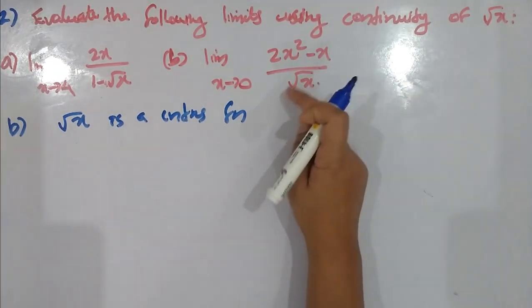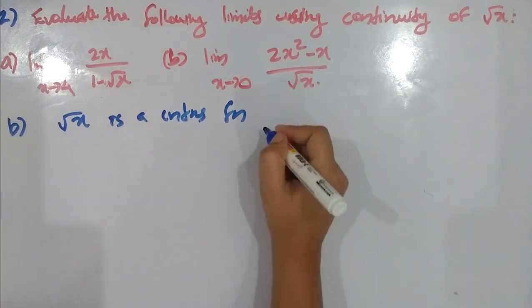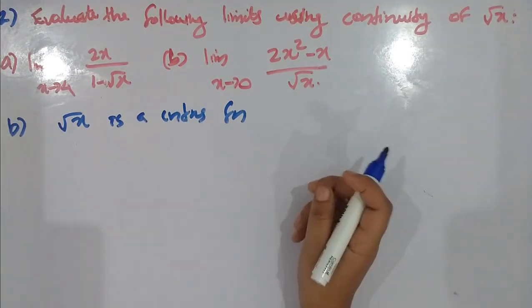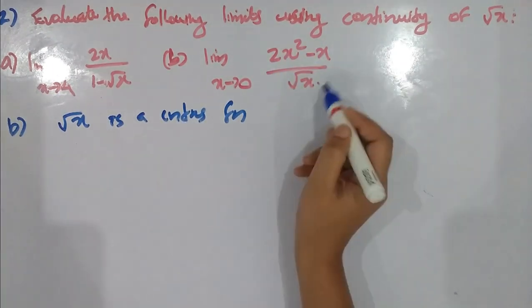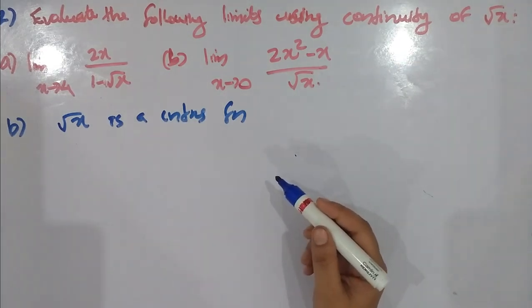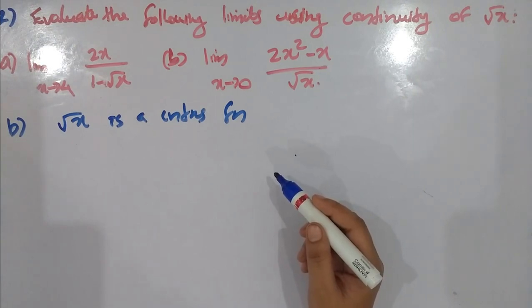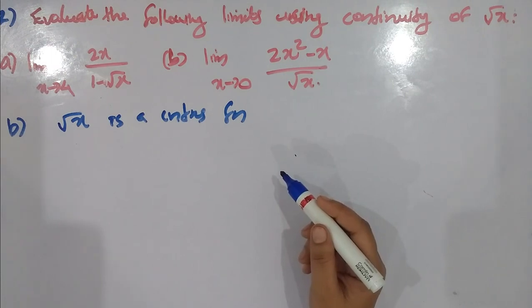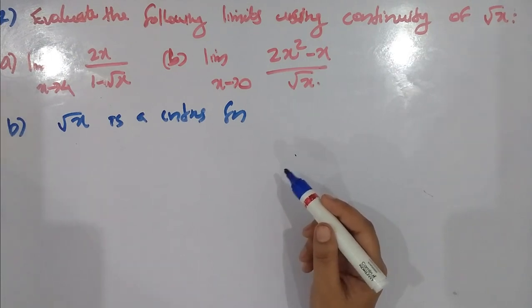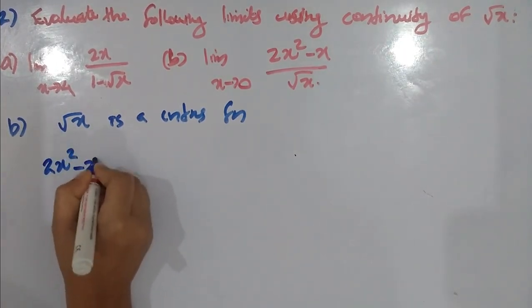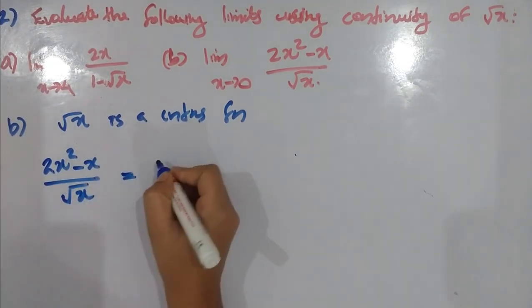If x is 0, then the denominator is 0. The denominator of the given function vanishes when x = 0. Hence the given function is not defined at x = 0. We will simplify it. The given function (2x² − x) / √x can be simplified.